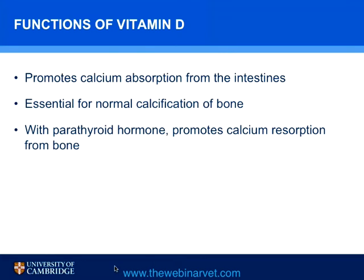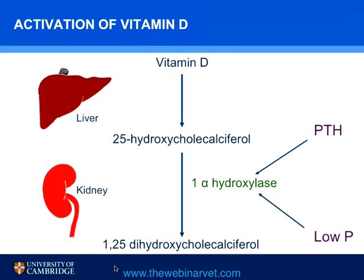The other hormone important in calcium metabolism is vitamin D. Vitamin D promotes calcium absorption from the intestines, is essential for normal calcification of bone, and together with parathyroid hormone promotes calcium reabsorption from bone. It is therefore actively involved, along with PTH, in trying to raise calcium concentrations. There are a number of forms of vitamin D.